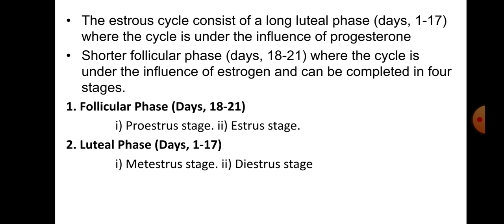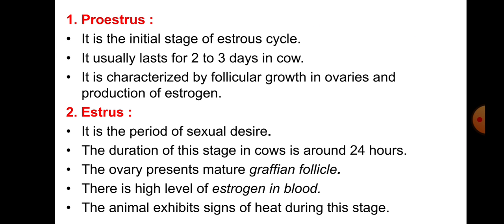Study these stages one by one. First is proestrus - it is the initial stage of the oestrus cycle. It usually lasts for two to three days in the cow. It is characterized by follicular growth - follicular means there are cells present in the ovaries - with ovarian follicular growth and production of estrogen, which is a hormone. This stage then leads into the next stage.